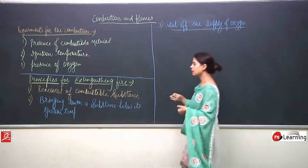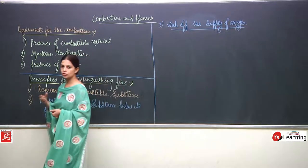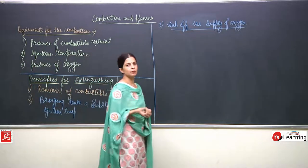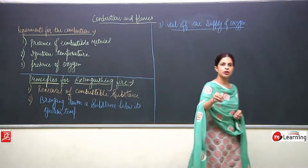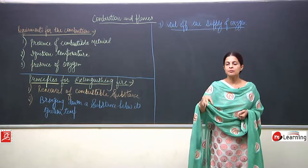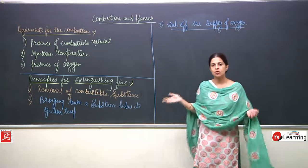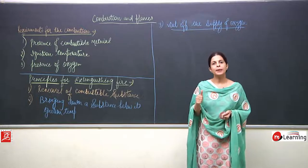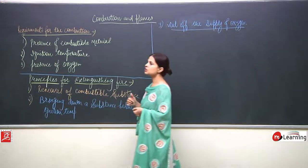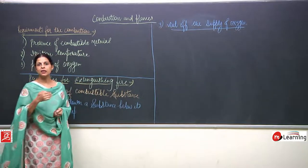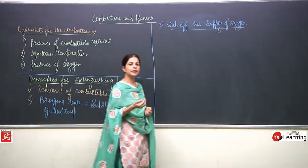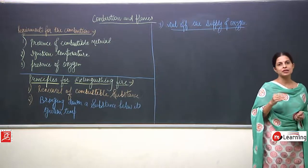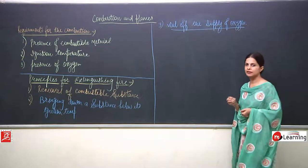To summarize: spreading soil on a burning person cuts off the oxygen supply. Wrapping the person in a blanket also cuts off oxygen. Throwing water brings the substance down from its ignition temperature, stopping the combustion.